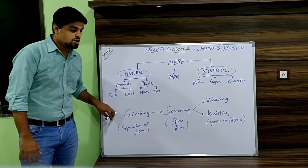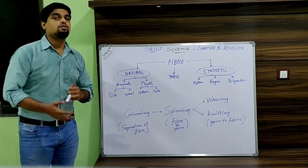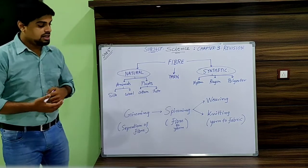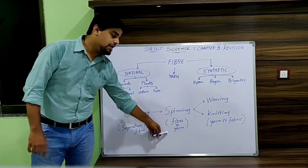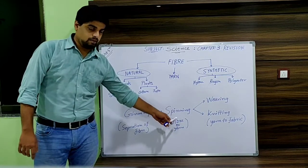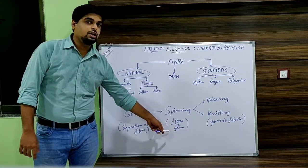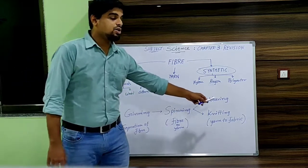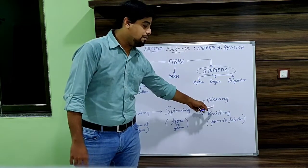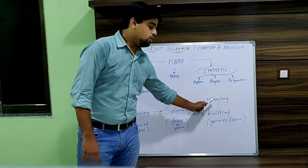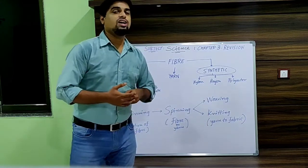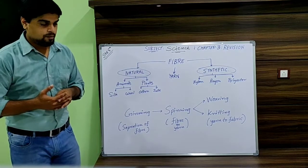In the process of gaining, the separation of fiber is done. After that, the separated fiber is converted into yarn in the process of spinning. And after converting into yarn, that yarn is converted into fabric with the help of weaving and knitting. These both processes are used to convert yarn into fabric.